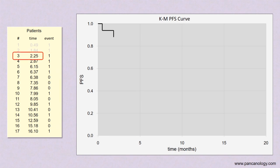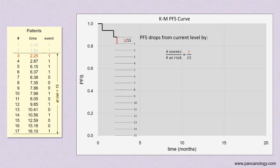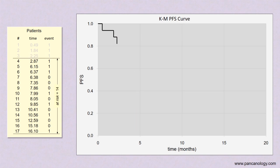Now let's do the third patient. Again, we're going to draw the line right over to 2.25 months. So we've had another event and we're going to drop the line. But we now have 15 patients at risk and we're going to drop the line from the current height by 1/15th of the remaining height. And these next three events stair-step down the exact same way. 1/14th, 1/13th, and 1/12th.